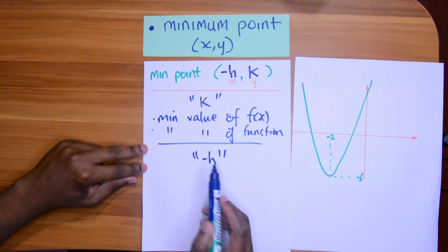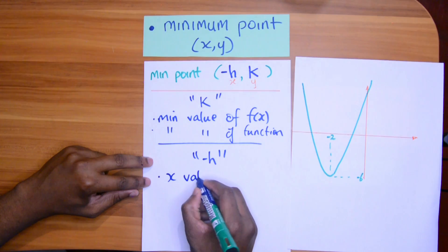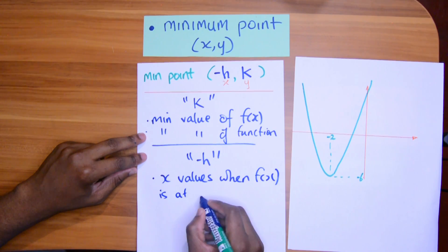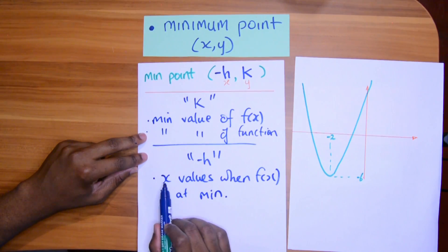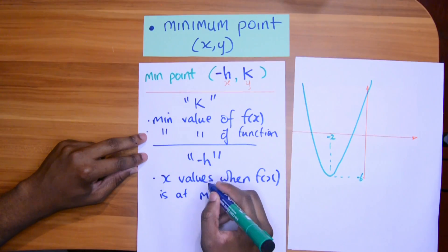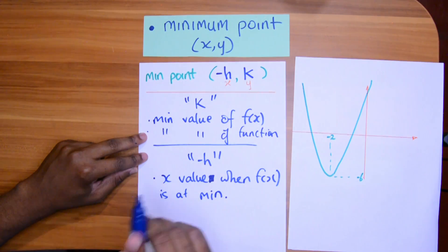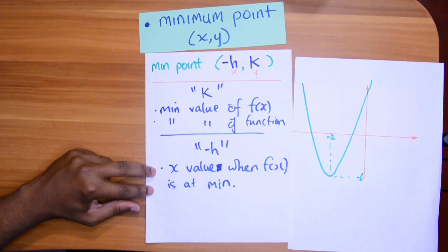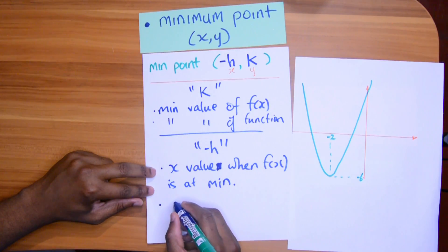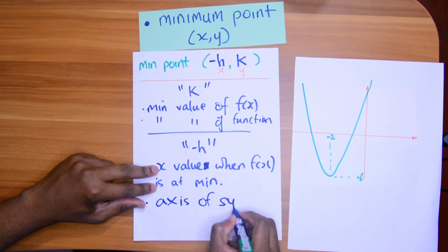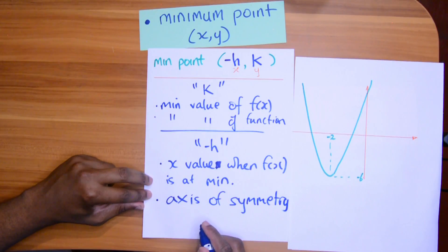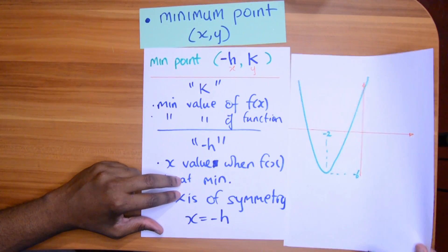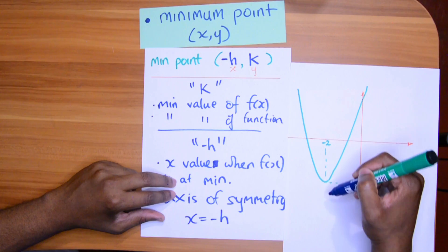For -h, they can ask: what is the x-value when f(x) is at its minimum? Note — it should be singular, not values, as there is always one x-value at the minimum point. The tricky way they ask this is for the axis of symmetry. If they ask for the axis of symmetry, you write x = -h, substituting whatever h is. For this example, the axis of symmetry is x = -2.